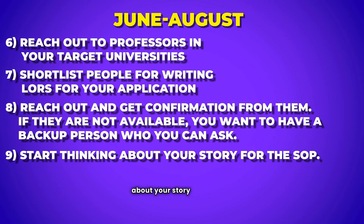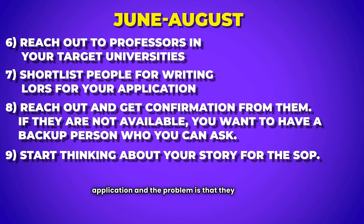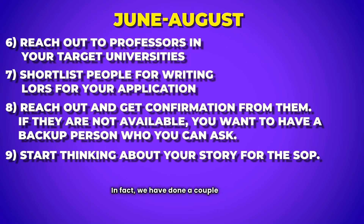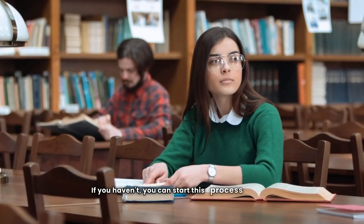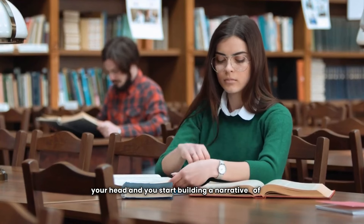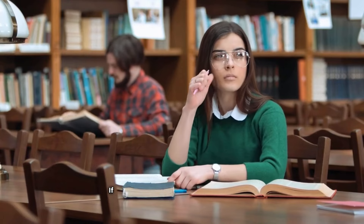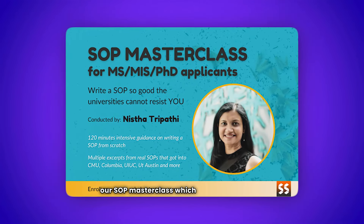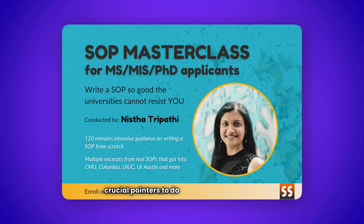Next, start thinking about your story for the SOP. SOPs are a very important component of your application and the problem is they take time — you simply cannot rush them. By July-August you should start planning everything you're going to write. With my clients I start much earlier, but no need to panic if you haven't yet. Start this process as soon as possible — let the ideas come and start building a narrative for how to present your candidature to the admissions committee. If you're struggling with this writing phase, check out our SOP masterclass for crucial pointers.